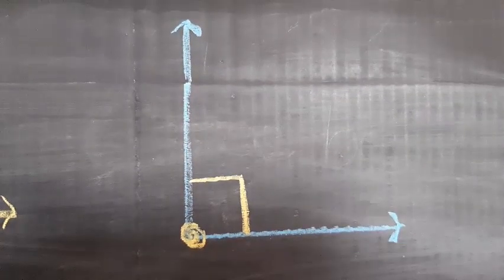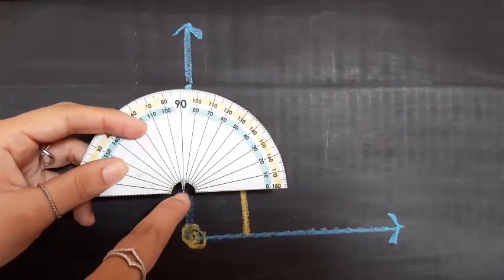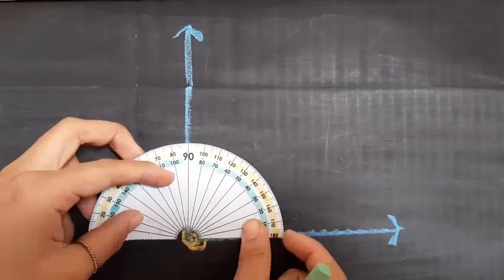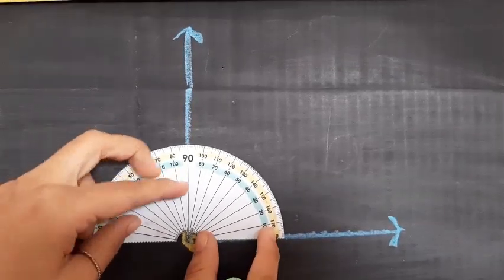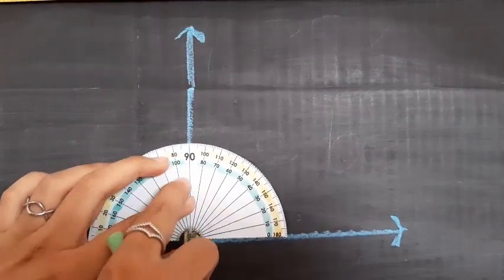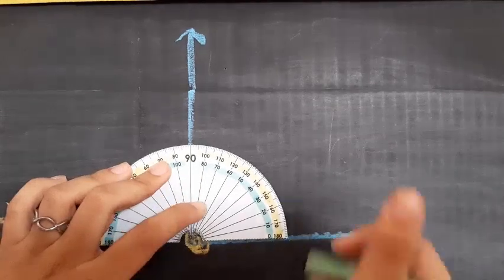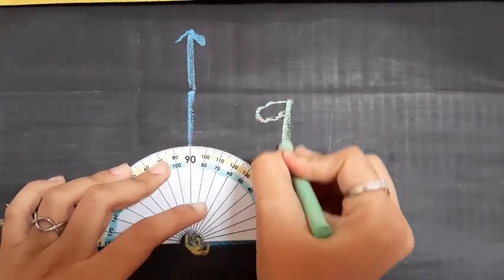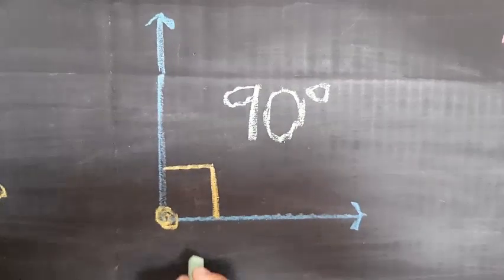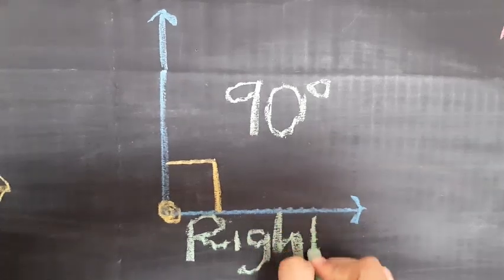Okay, this is the second example. Remember, the center point of the protractor goes on the vertex and the bottom line of the angle matches the edge of the protractor. And as you can see, this angle measures 90 degrees, which means that this is a right angle.